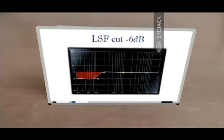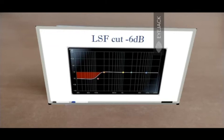This is the LSF cut, which is the opposite of LSF boost. The frequencies below the specified cutoff are attenuated by a specified amount — in this case, negative 6 dB — whereas the frequencies above the specified cutoff are left untouched and have zero gain. All the frequencies below the cutoff have a negative 6 dB gain.